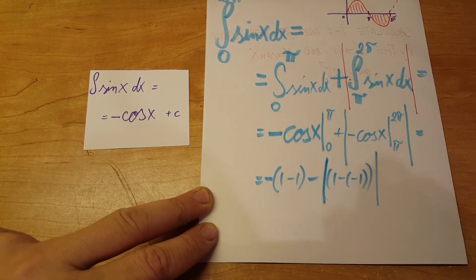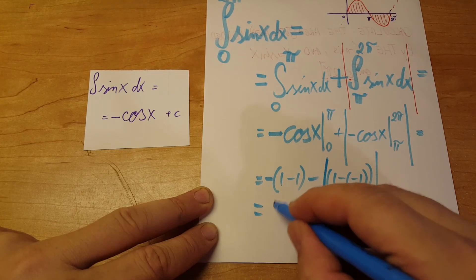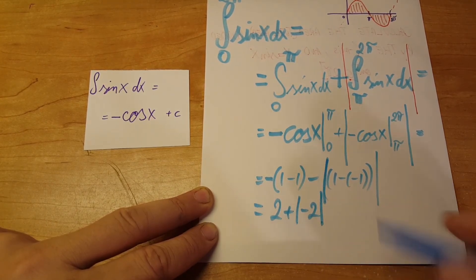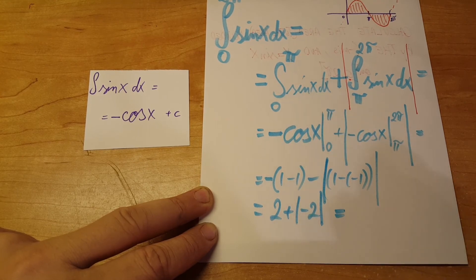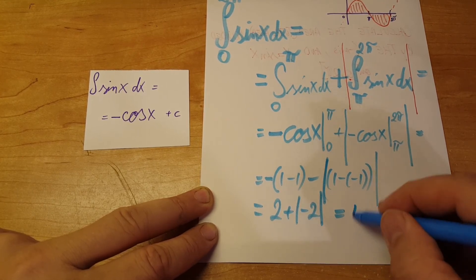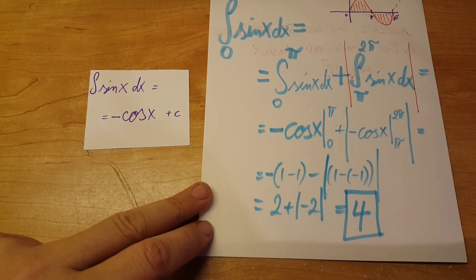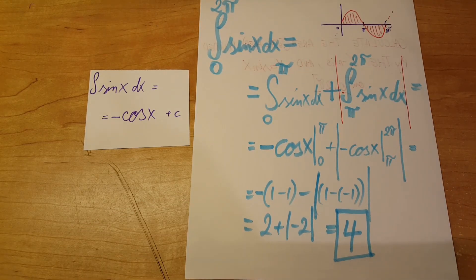This equals two plus two, which will give us a total area of four. This would be our total area.